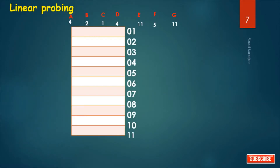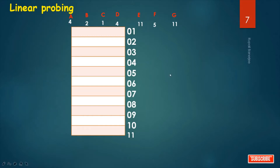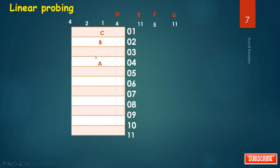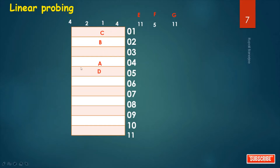Let's see how to solve this collision by linear probing. These are our data and these are the given memory locations. We map: C goes to location 1, B goes to location 2, A goes to location 4. D also maps to location 4, but location 4 is already occupied. So we search for the next empty bucket, which is location 5 — so D is placed at location 5.